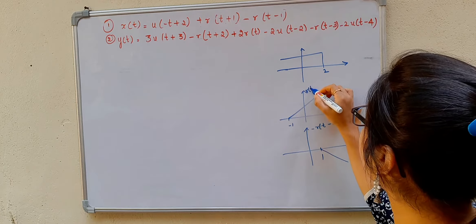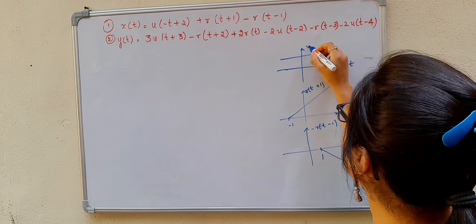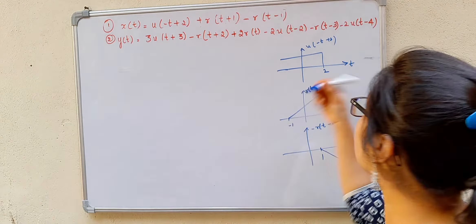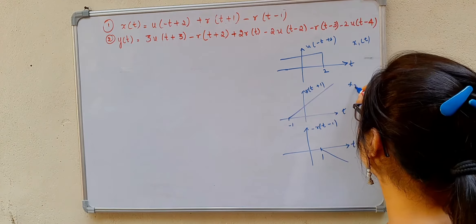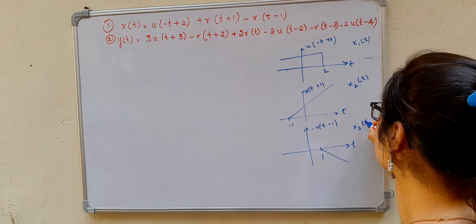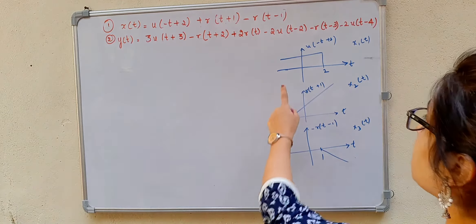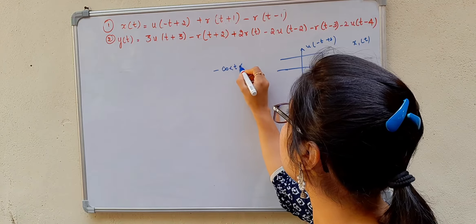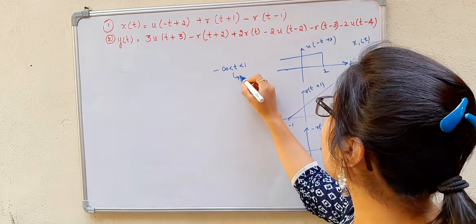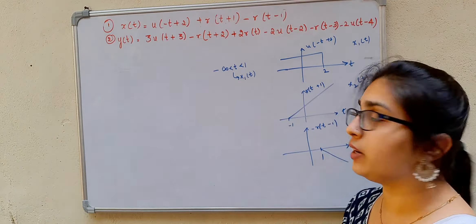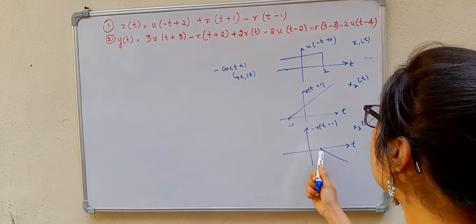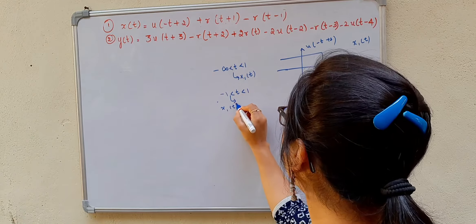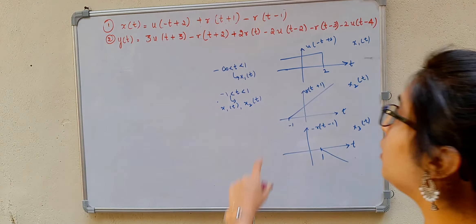This is your r(t+1), and this is u(-t+2). Now we have to add all three signals. I will consider x1(t) as u(-t+2), x2(t) as r(t+1), and x3(t) as -r(t-1). From minus infinity till minus 1, we have only x1(t). From minus 1 to 1, we have both x1(t) and x2(t).